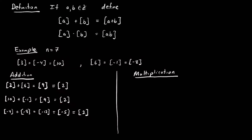Now let's check multiplication. [3] · [6] = [18]. Repeatedly subtracting 7: 18 − 7 = 11, 11 − 7 = 4. So [3] · [6] = [4]. The remainder of 18 divided by 7 is 4.